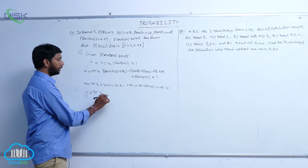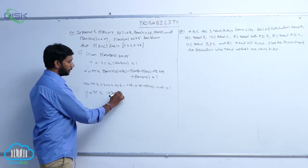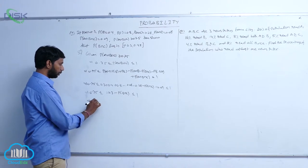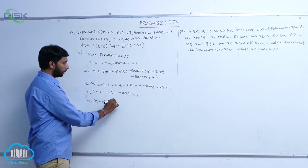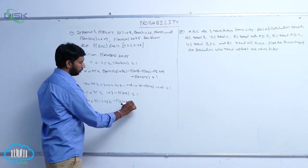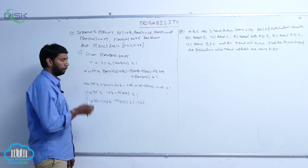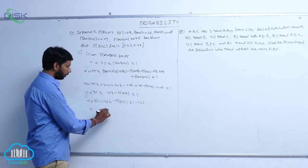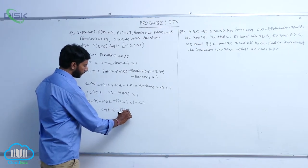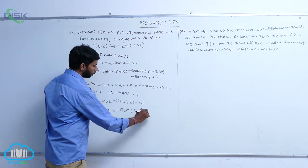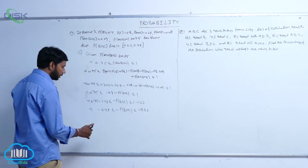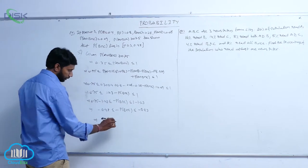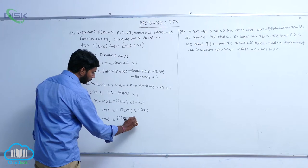This implies 0.75 ≤ 1.23 − P(B∩C) ≤ 1. Subtracting 1.23 from all sides: −0.48 ≤ −P(B∩C) ≤ −0.23. Multiplying by −1 on both sides: 0.23 ≤ P(B∩C) ≤ 0.48.